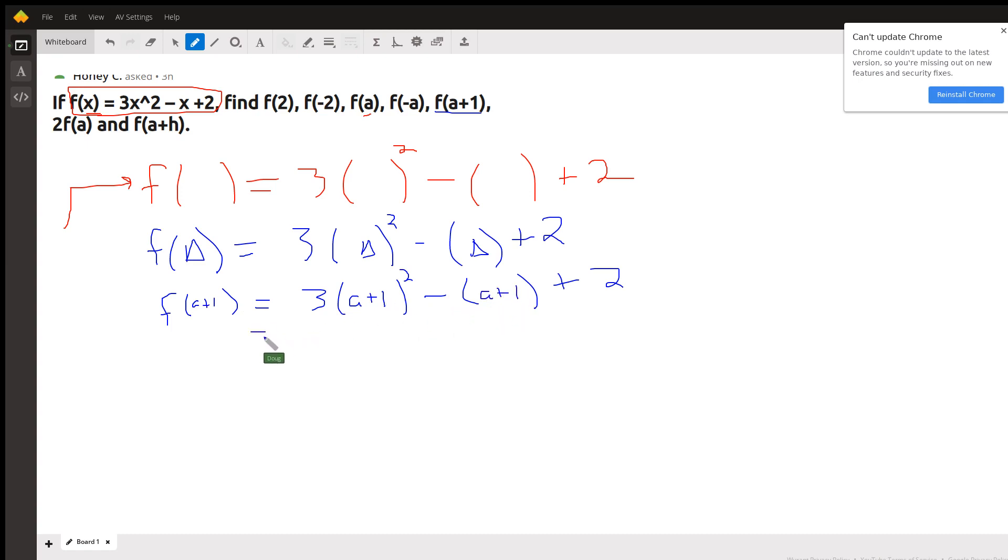Now simplify that. Well, you have to square this binomial. Hopefully you're able to do that quickly, getting a perfect square trinomial.